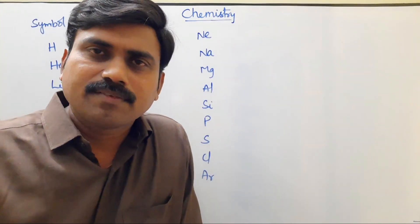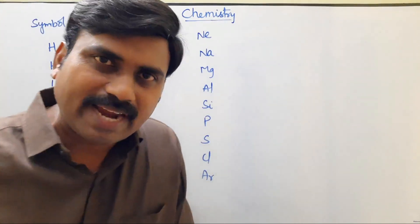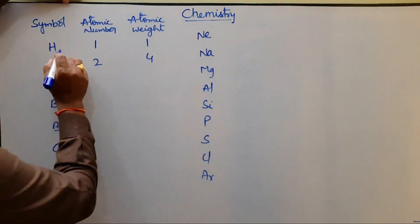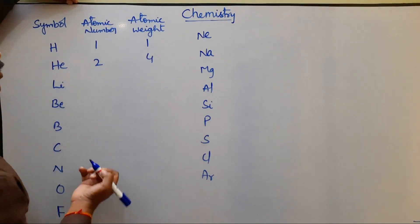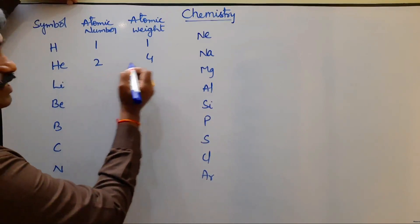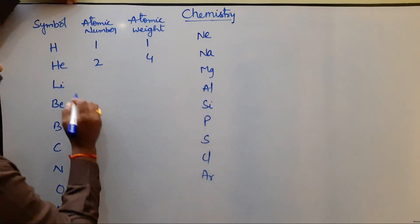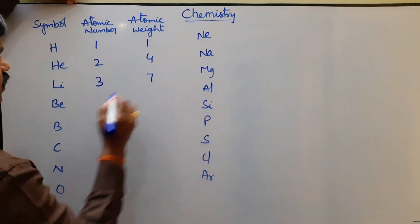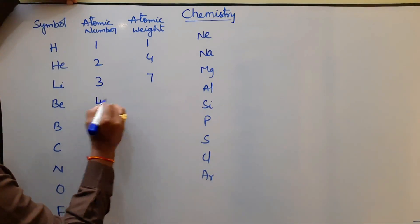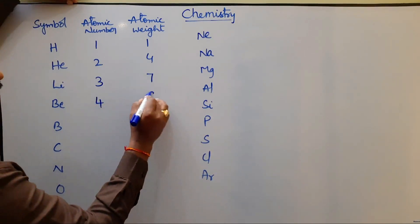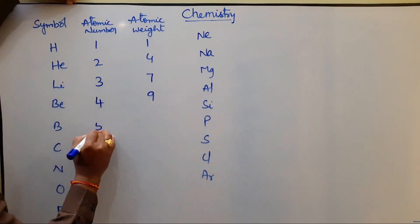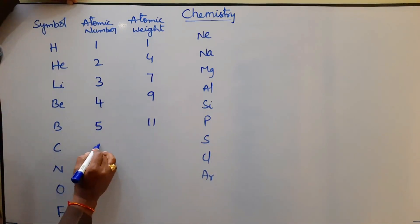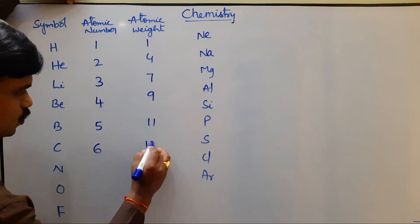To calculate the molecular weight of any chemical substance, first you should practice the atomic weight of each and every element. Hydrogen atomic number is one, its atomic weight is also one. Helium atomic number is two and its atomic weight is four. Lithium atomic number is three, its atomic weight is seven. Beryllium atomic number is four and atomic weight is nine. Boron atomic number five and its atomic weight is eleven. Carbon atomic number six and atomic weight is twelve.